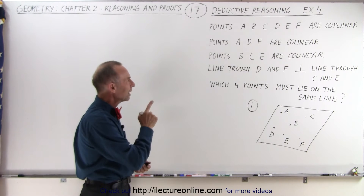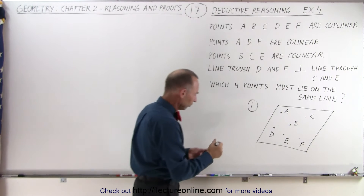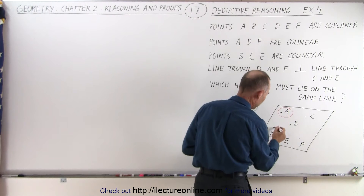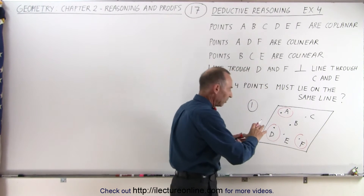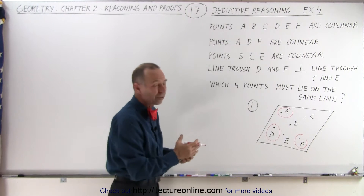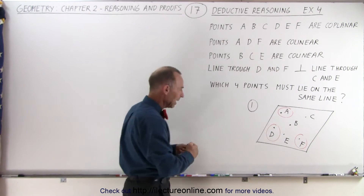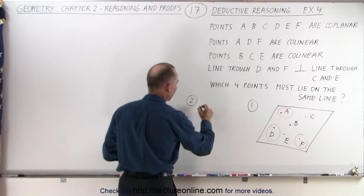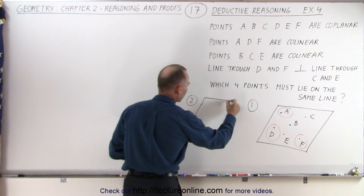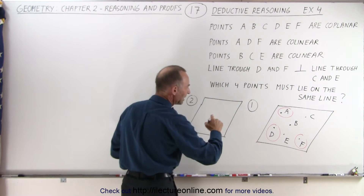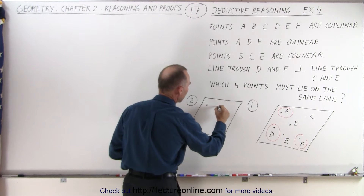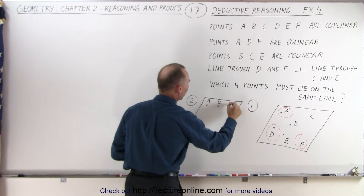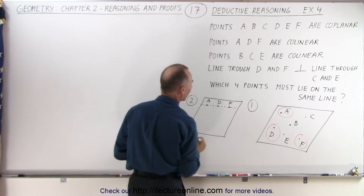But then the next statement tells us that A, D, and F are collinear. When I look at A, D, and F, they are on the right plane but they're not collinear. So I need to redraw my plane and make sure that those three points are indeed collinear. So now we do step two and redraw the plane, making sure that those three points — A, D, and F — are on the same line. There's A, there's D, there's F. We can see that they're clearly on the same line.